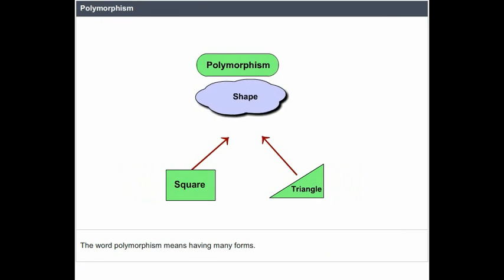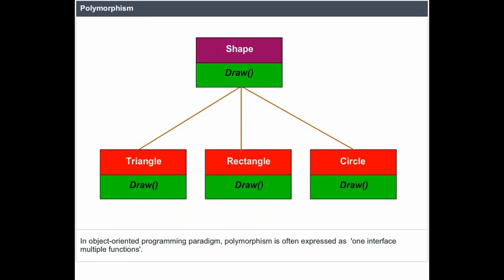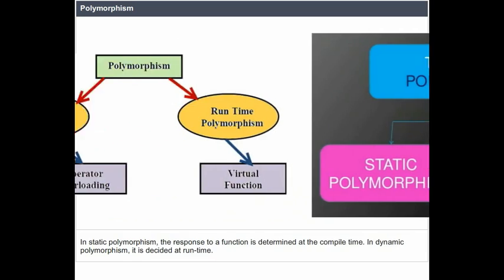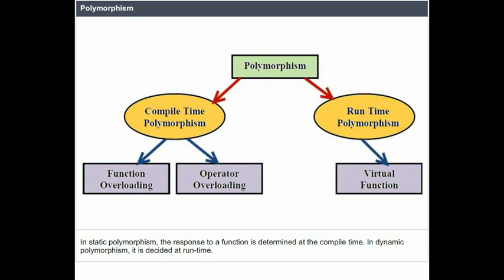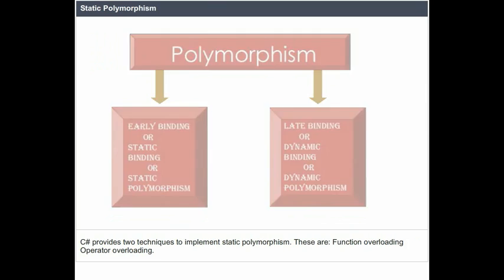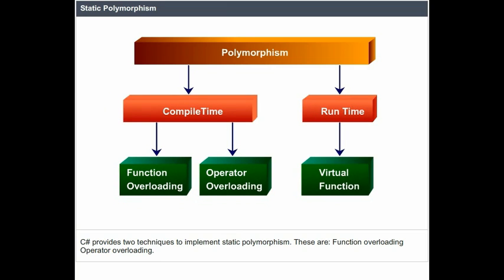The word polymorphism means having many forms. In the object-oriented programming paradigm, polymorphism is often expressed as one interface, multiple functions. Polymorphism can be static or dynamic. In static polymorphism, the response to a function is determined at compile time. In dynamic polymorphism, it is decided at run time. In C#, the mechanism of linking a function with an object during compile time is called early binding, also called static binding. C# provides two techniques to implement static polymorphism: function overloading and operator overloading.